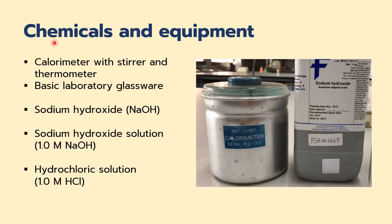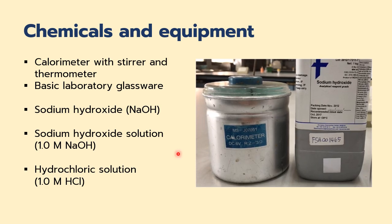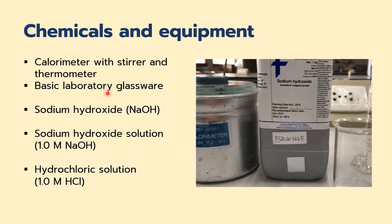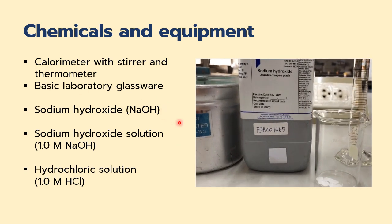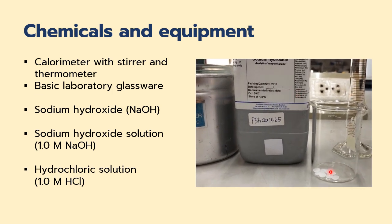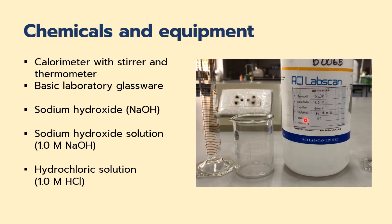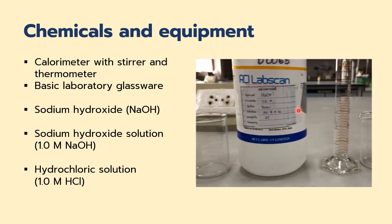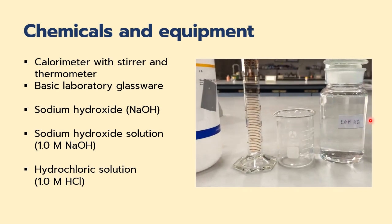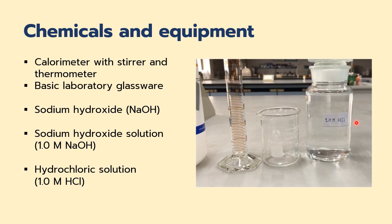For chemicals and equipment, we need a calorimeter with a stirrer and thermometer to record temperature changes, along with basic laboratory glassware. The chemicals needed are solid sodium hydroxide, a one molar sodium hydroxide solution, and a one molar hydrochloric acid solution.